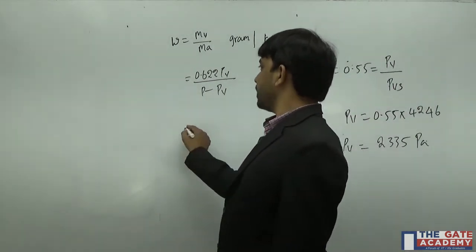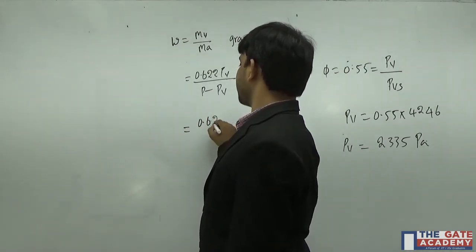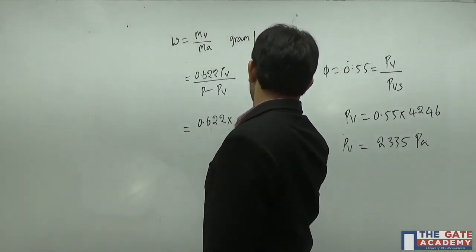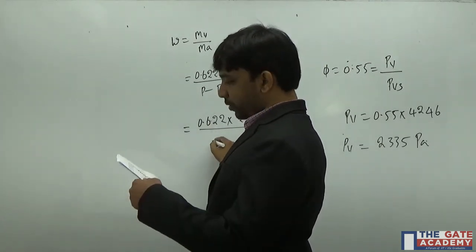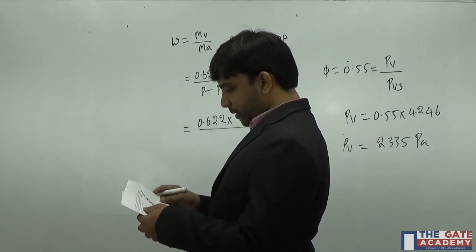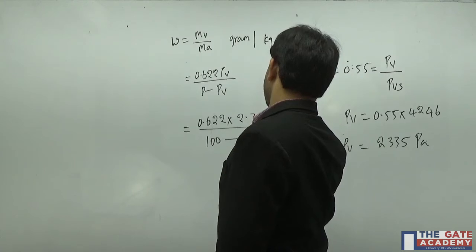This is partial pressure of water vapor. Specific humidity is 0.622 times partial pressure of water vapor, 2.335 kilopascal, divided by total pressure. Total pressure of the given location is 100 kilopascal. It is 100 minus 2.335.